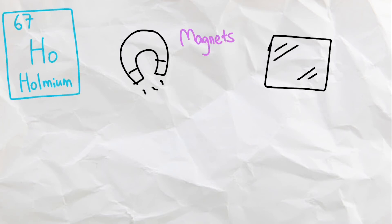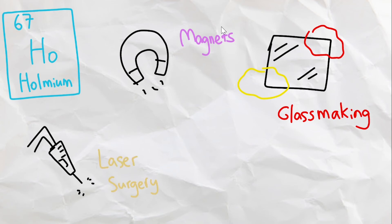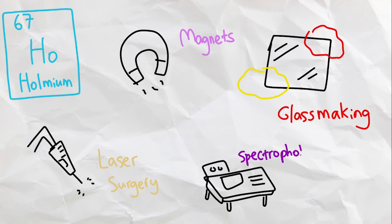Next we have Holmium, a soft metal found in alloys to make magnets. It also gives off a red or yellow color for glassmaking, and it may also serve some purpose in laser surgeries. Holmium filters are used in spectrophotometers to check the wavelength of ultraviolet and visible light.